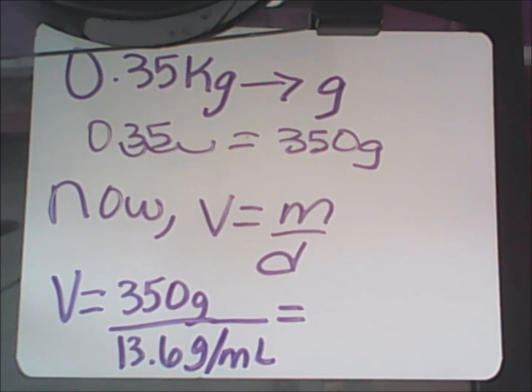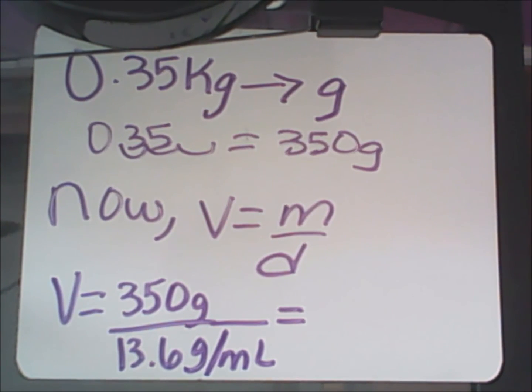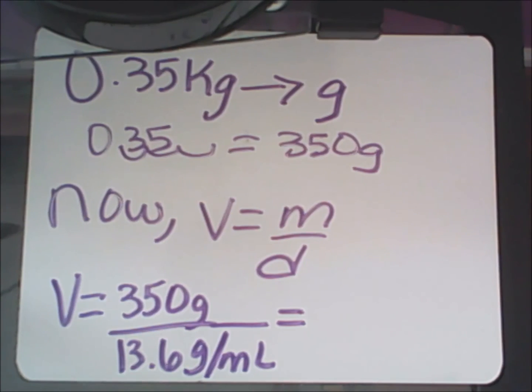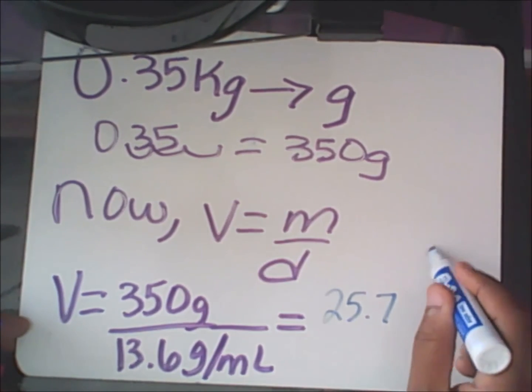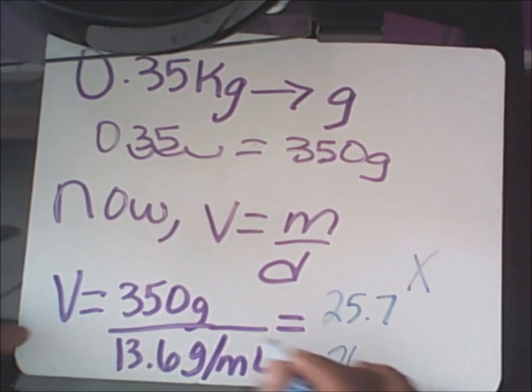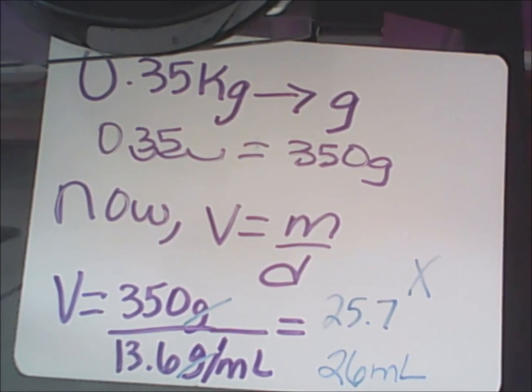I plug in 350 divided by 13.6 and I get 25.7. But if I get 25.7 as my final answer, that's going to be marked wrong. Instead, I should record 26 milliliters as my final answer.